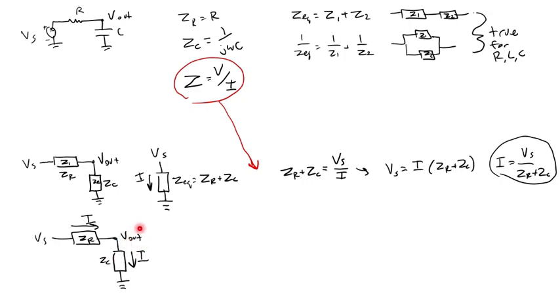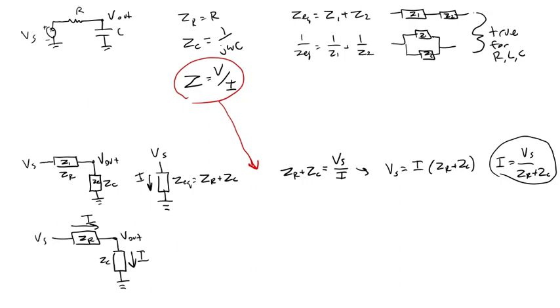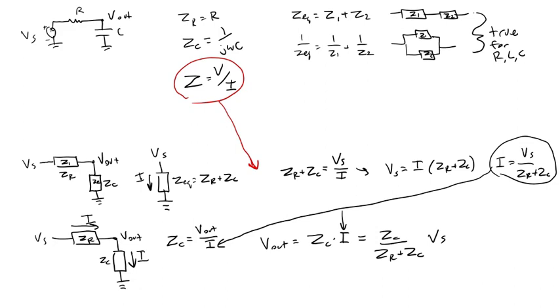I am interested in Vout here, so to find that, I can just look at the voltage drop over the capacitor. Using the equation for impedance for the capacitor, I'm going to have ZC equals Vout over I. I want to get Vout as a function of Vs, so I can plug this expression I have for the current into there. If I rearrange this to be Vout equals ZC times I, I'm plugging the current expression in, that becomes ZC over ZR plus ZC times Vs. There we go.